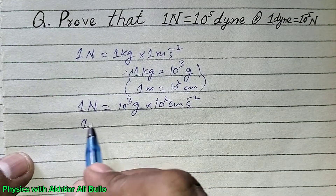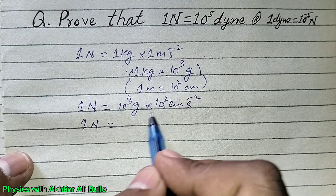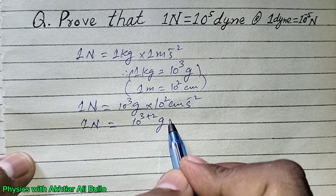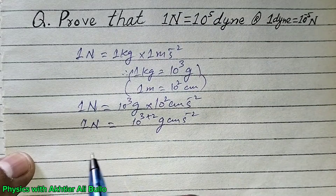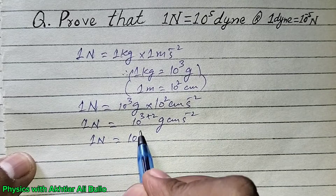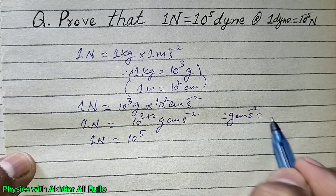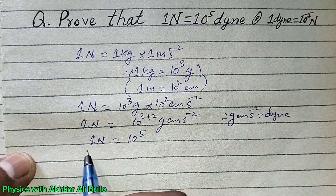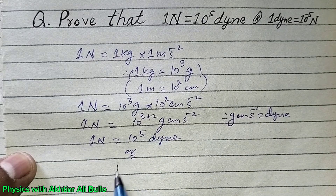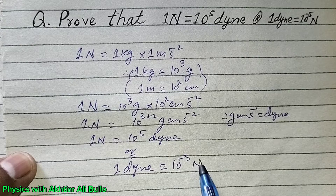When bases are the same in multiplication, we add the powers. So it will be 10 raised to the power 3 plus 2, gram into centimeter per second square. So 1 newton will be equal to 10 raised to the power 5 gram centimeter per second square, which is equal to dyne. Therefore 1 newton equals 10 raised to the power 5 dyne, or 1 dyne equals 10 raised to the power minus 5 newton.